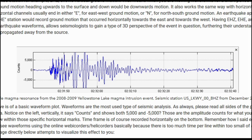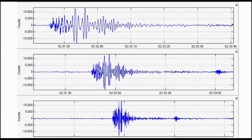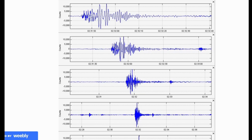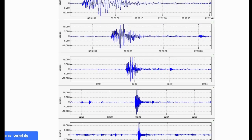Timeframe is recorded horizontally on the bottom. Remember how I said earlier that you can rarely ever see waveforms using the online webicorders or helicorders? Basically because there is too much per line with too small of an image. The image directly below attempts to visualize this effect, showing five incremental steps as I use the program Swarm to zoom out using the waveform analysis window. Please note the time frame changes.